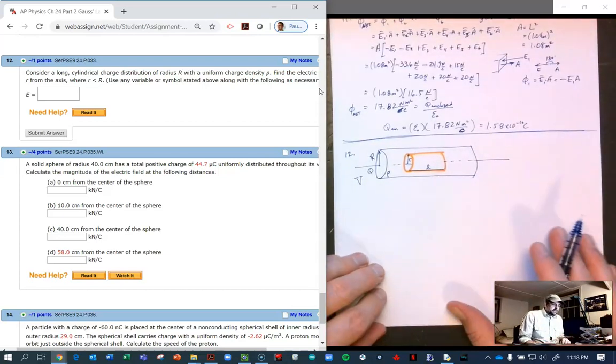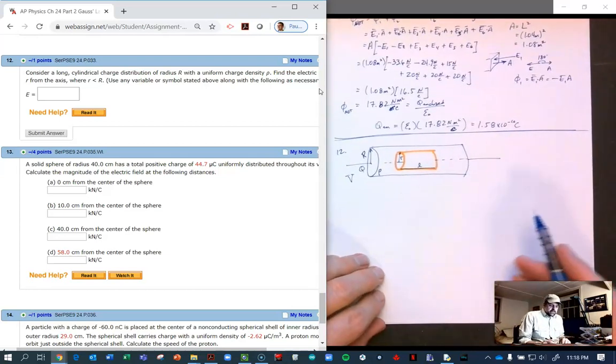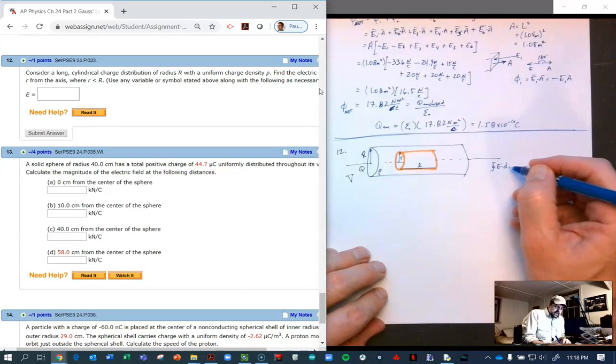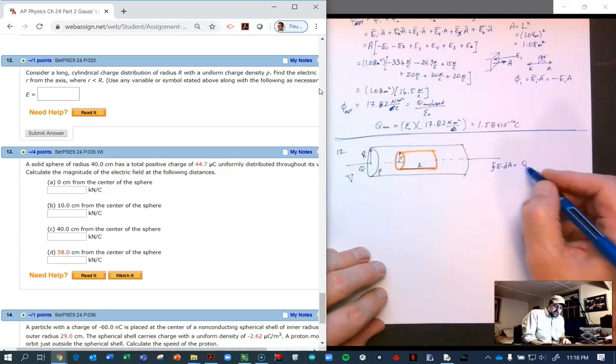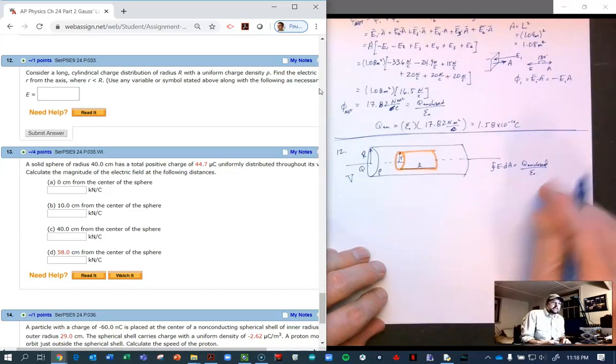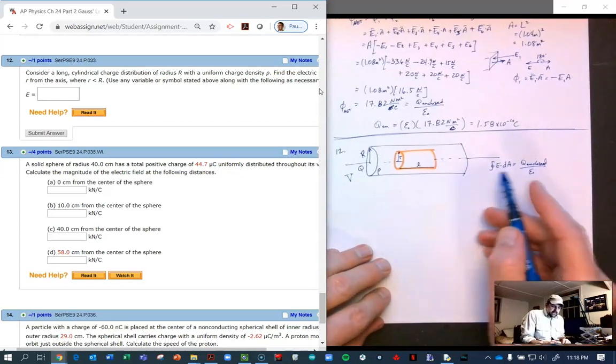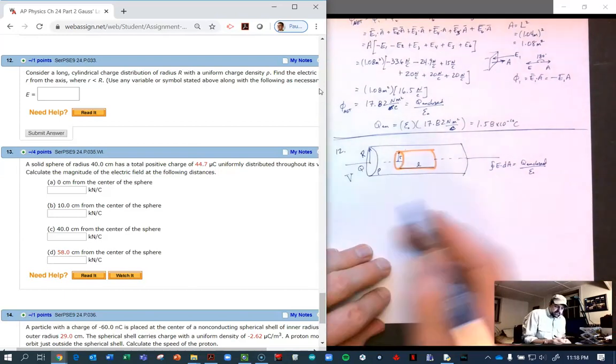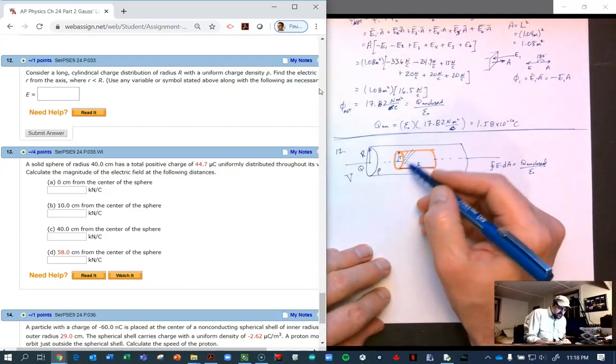We're looking for the electric field. Recall that the integral of E dot dA equals Q enclosed over epsilon naught. This is the area of the Gaussian surface, that orange line, and Q enclosed is all of this guy here.